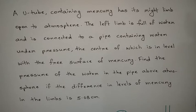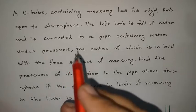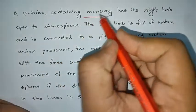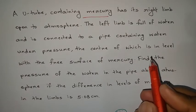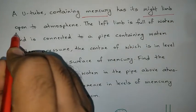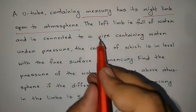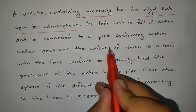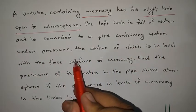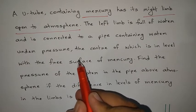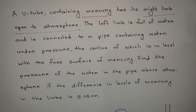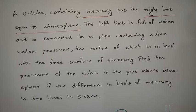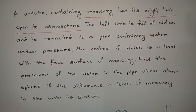So here a U-tube manometer is given containing mercury. The right limb is open to atmosphere. The left limb is full of water and is connected to a pipe containing water under pressure. The center of the pipeline is in line with the free surface of mercury on the right limb.